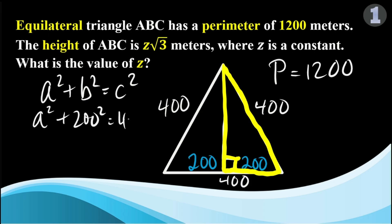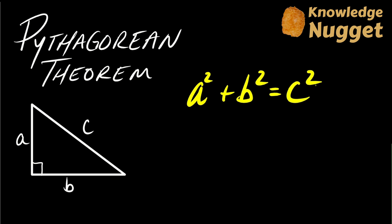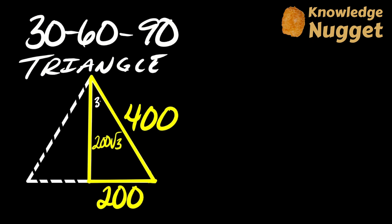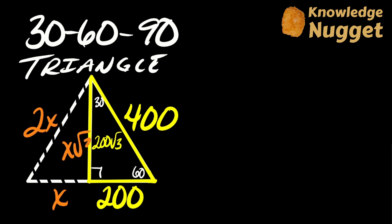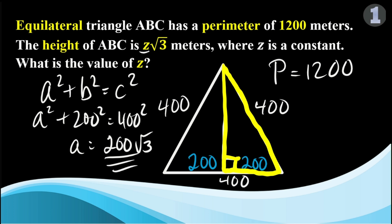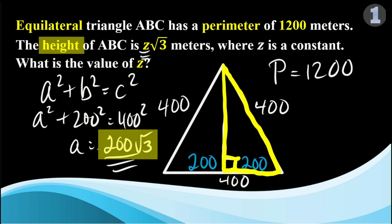We can either use the Pythagorean theorem — a squared plus b squared equals c squared — or the fact that in a 30-60-90 triangle, the shortest side is always one half the hypotenuse, and the medium side is always the shortest side times the square root of 3. So with the shortest side of 200, the height is 200 times the square root of 3.